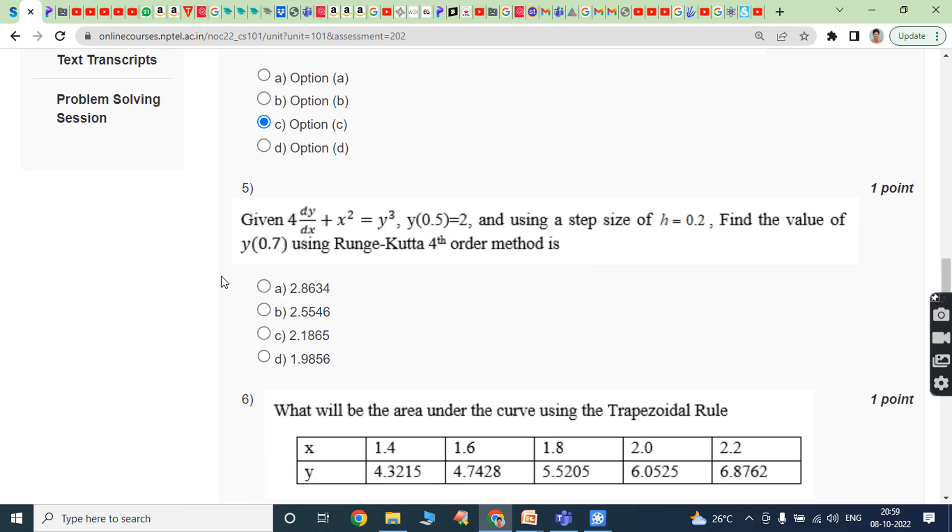Fifth question: Given 4 dy/dx plus x squared equals y cubed, y(0.5) equals 2, and using a step size h equals 0.2, find the value of y(0.7) using Runge-Kutta fourth order method. The answer is option B, 2.5546.